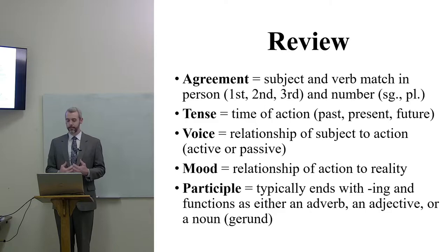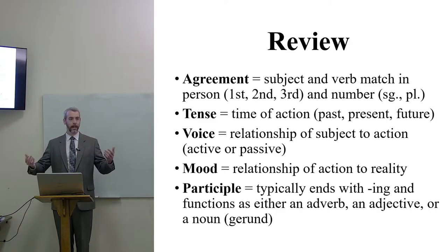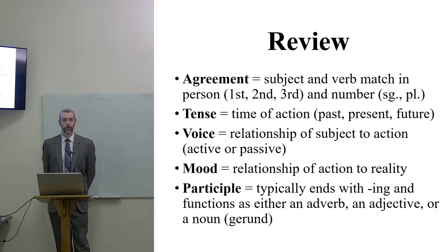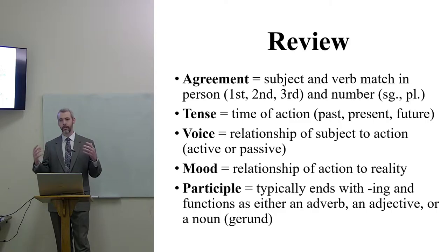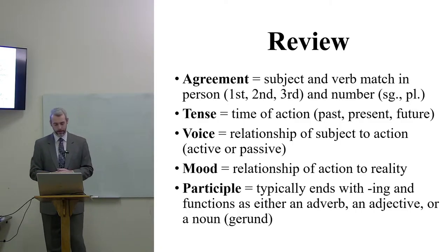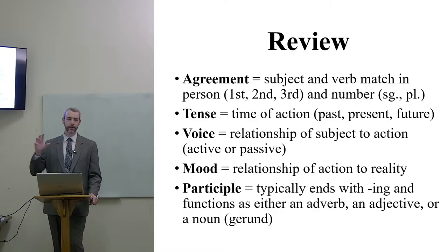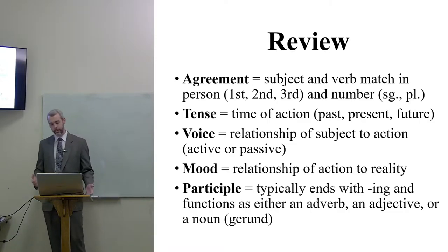Voice describes the relationship of the subject to the action. In active voice, the subject is doing the action. In passive voice, the subject is receiving the action — for example, 'I was hit by the ball.' Then we have mood, which is the relationship of the action to reality. We have the indicative, which portrays reality. We can also move into the subjunctive — possibility, conditional — and so forth, with the imperative, infinitive, and participles. And then there are participles, which are ING words. I bring this up in English review because it's vital when we get to Greek.